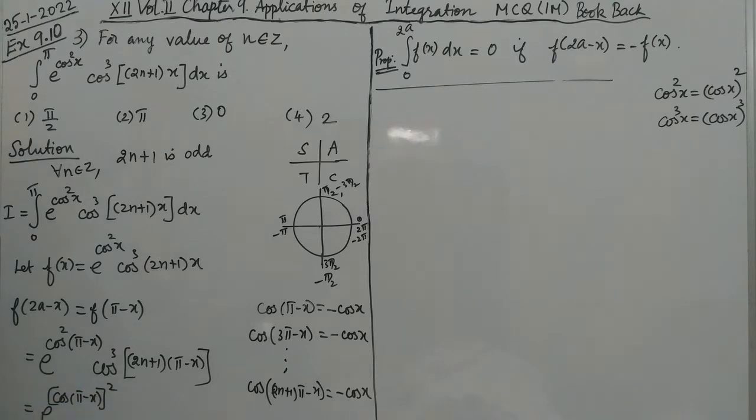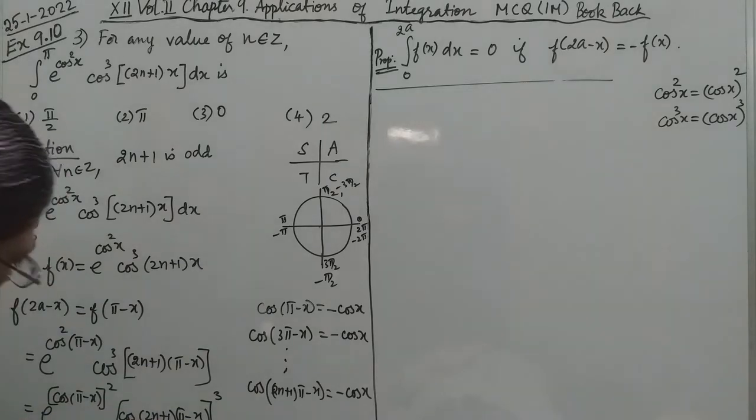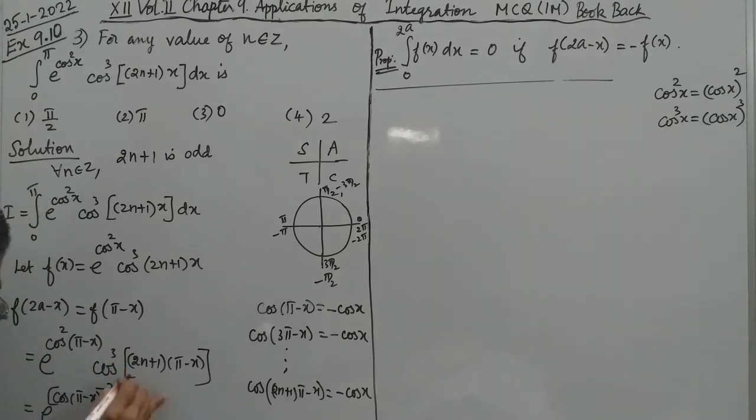So this can be written as e^(cos(π-x))² times [cos(2n+1)(π-x)]³. We can write it as cos[(2n+1)π-x] to the power 3.